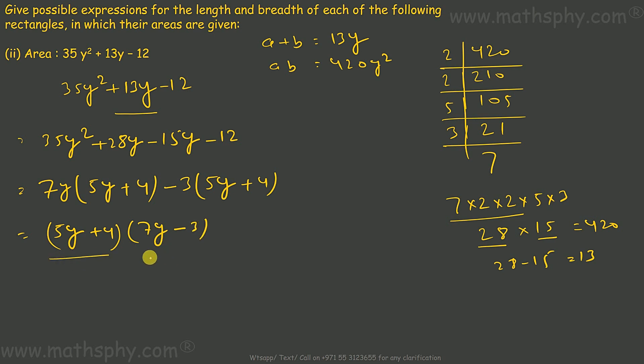So this can be length, this can be breadth, or this can be breadth, this can be length. So, all right, possible length can be 5y plus 4, and breadth can be 7y minus 3. That sounds right.